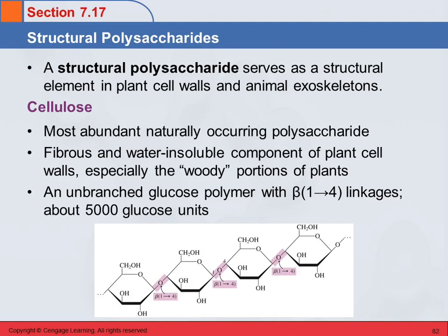There are also structural polysaccharides, which give plant cell walls and animal exoskeletons their structure. Mammals and birds have bones, but insects don't — yet they do have structure. If you step on a cockroach it goes crunch because it has an exoskeleton made out of polysaccharides. Trees stand upright because they have structural polysaccharides in their trunks. Cellulose is one such structural polysaccharide — it's the most abundant of the naturally occurring polysaccharides and is the fibrous component of plant cell walls, especially the woody parts of plants.